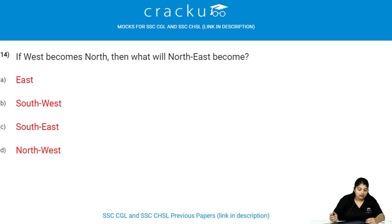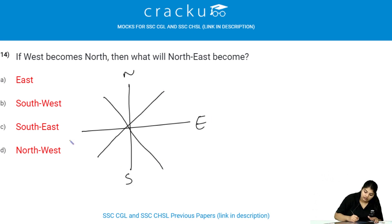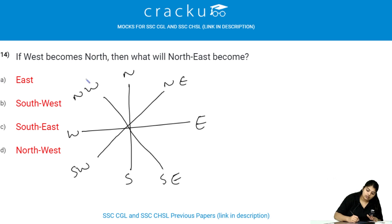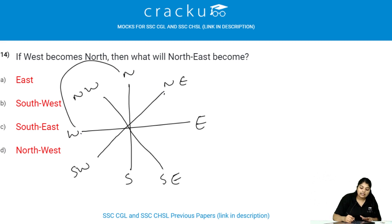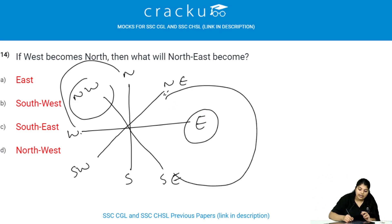If west becomes north, then what will north-east become? Draw the direction chart: north, south, east, west, north-east, south-west, north-west. West is becoming north — it is jumping over north-west. So similarly, north-east jumps over east and becomes south-east. Therefore, the answer is option C.